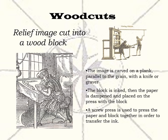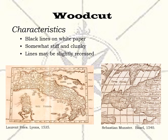The first process we'll look at is that of making a relief woodcut map. In a woodcut, the image is cut into a wood plank parallel to the grain. The image is more carved than engraved using a knife, graver, or similar tool. The block is inked with a thick ink, then the paper is dampened and placed on the press with the block. A screw press is used to press the block and paper together, thus transferring the ink to the paper. Woodcut maps have black lines on white paper, are somewhat stiff and clunky, and the lines are sometimes slightly recessed on the paper because of the pressure from the press.